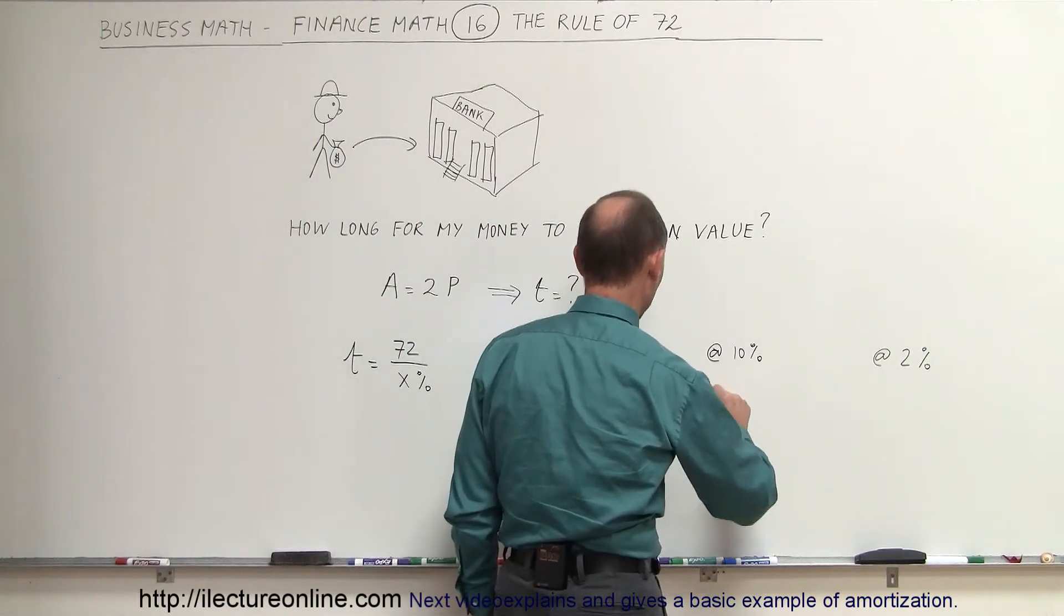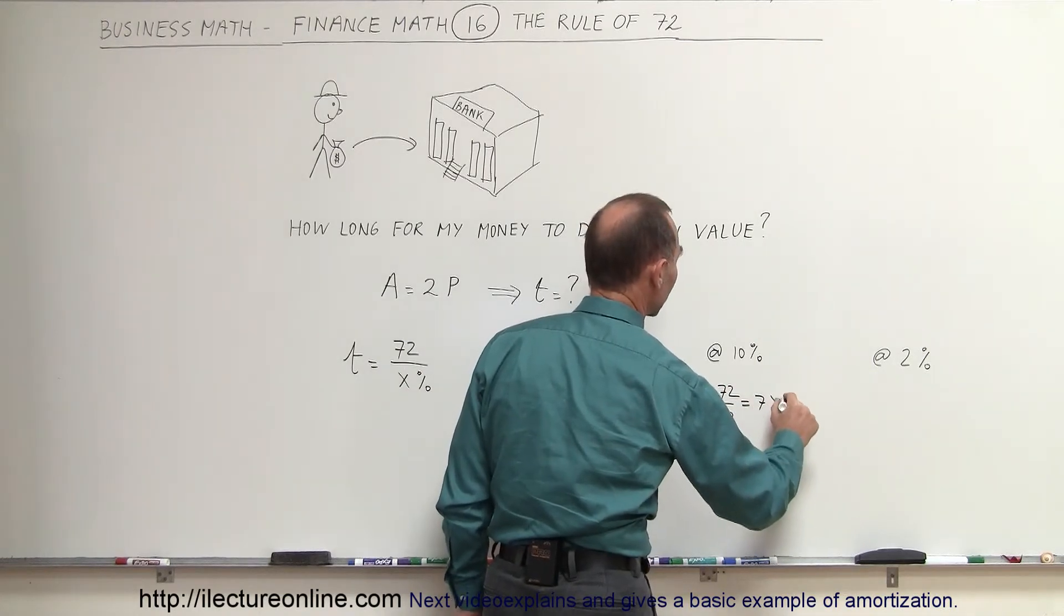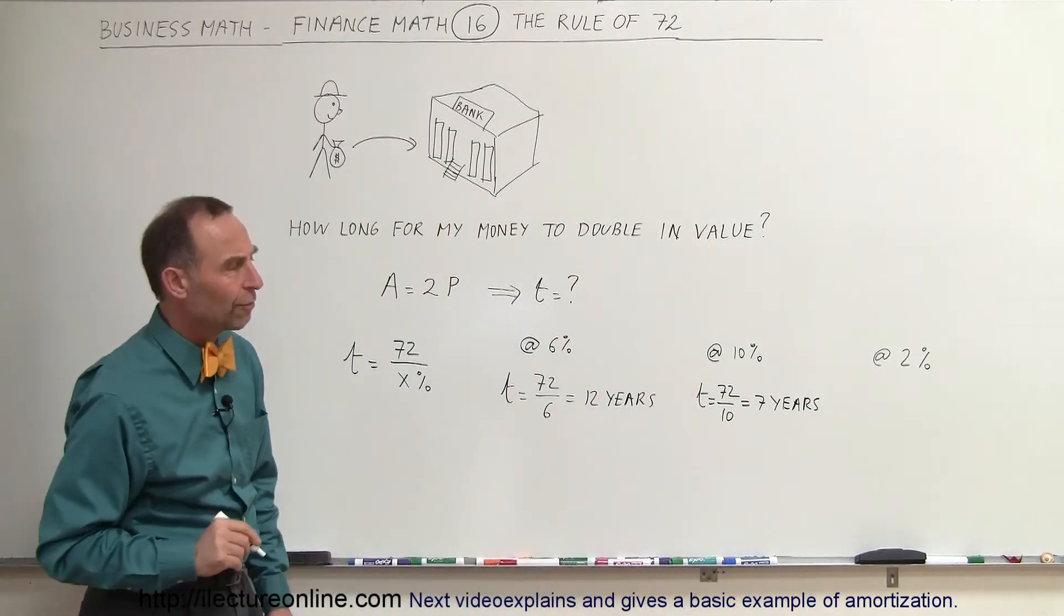At 10%, the time would be equal to 72 divided by 10, which is about 7 years. If you can earn 10% on your money, in 7 years you can double your investment.